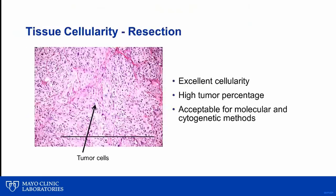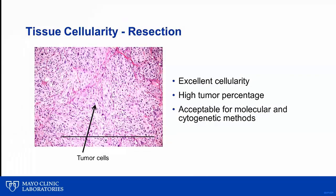This resection tissue has fantastic cellularity and a high tumor percent, so this is likely a specimen that would yield enough nucleic acid and would be acceptable for molecular and cytogenetic methods. When looking at small biopsies, it is not just the size of the tissue but the cellularity and tumor percent that matter. The biopsy on the left has high cellularity and high percent tumor nuclei and is likely acceptable for most molecular and cytogenetic methods, despite the tissue being only a couple of millimeters. The biopsy on the right, however, while similar in size, does not have many nuclei present and even fewer tumor nuclei, so it would be inadequate for most cytogenetic and molecular methods.